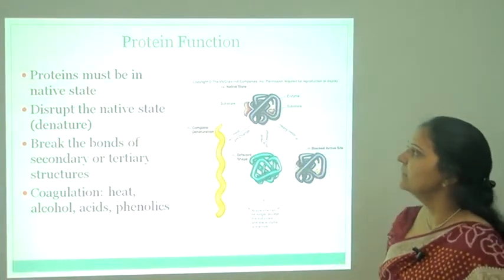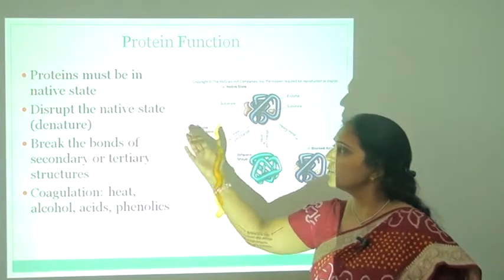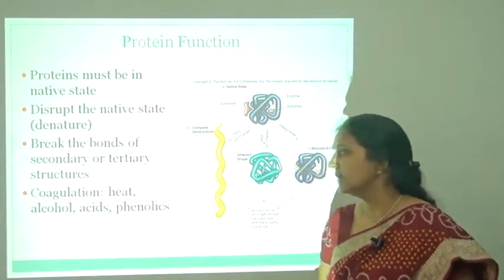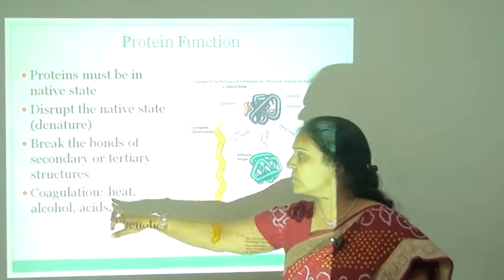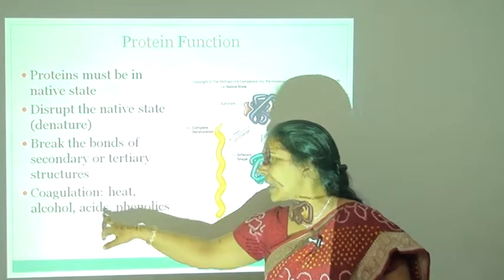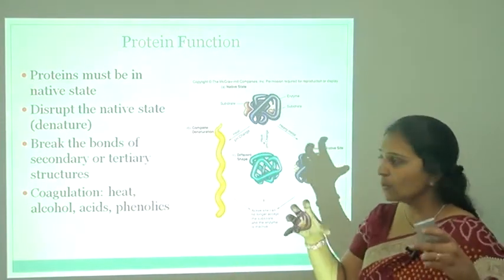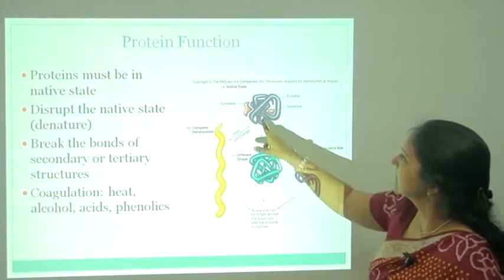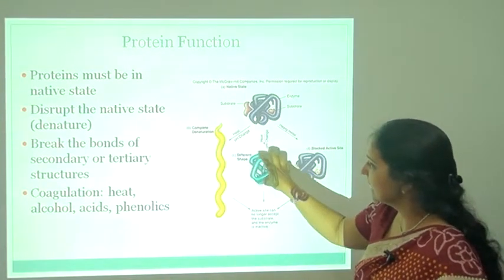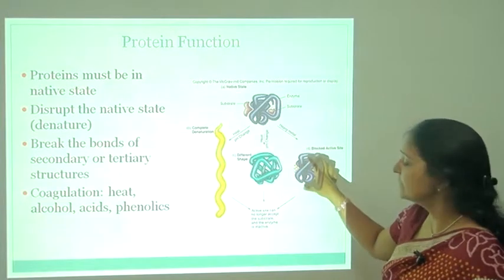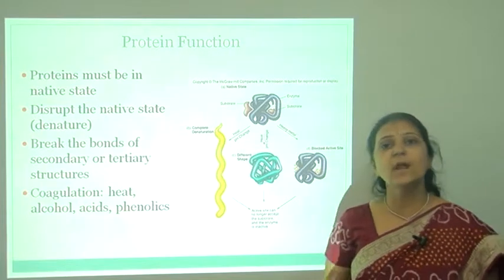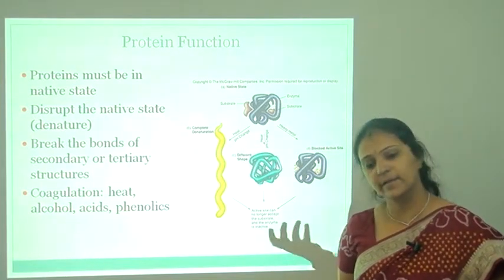Regarding protein function: proteins must be in the native state. Sterilizing agents disrupt the native state of the protein and break the bonds of the secondary and tertiary structure. Some sterilizing agents cause coagulation of proteins — such as heat, alcohol, acids, and phenolics. Some agents change the shape of the protein, and some block the active site of the protein, so the protein will not function and the organism cannot survive.